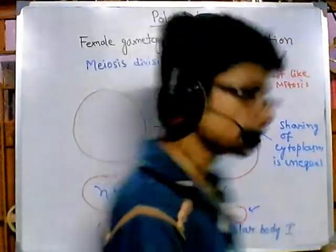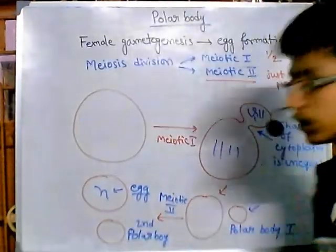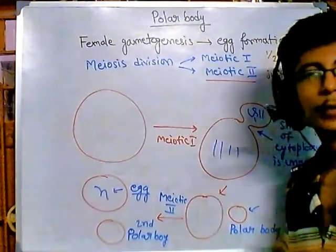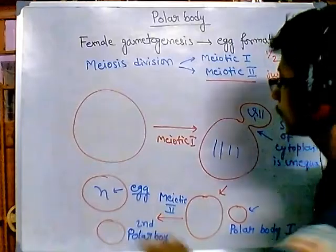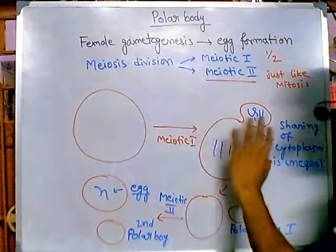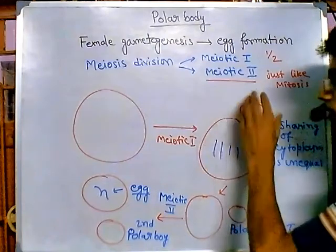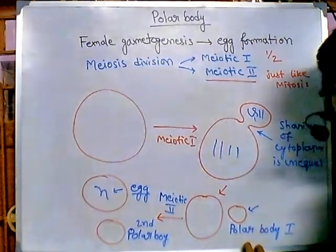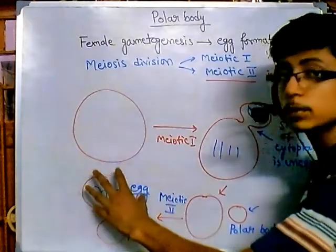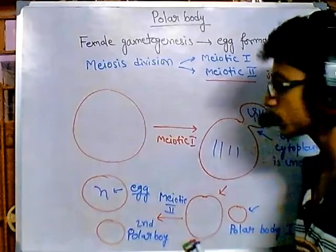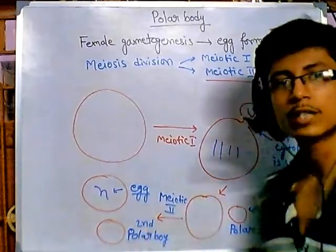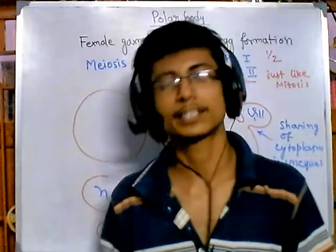So these are called polar bodies, guys. No confusion. This is also generated during the gametogenesis of females — the production of the egg. During this process, after meiotic 1, sharing of cytoplasm is unequal and produces a large cell and a small cell — that small cell is called polar body 1. During the second meiotic division, again unequal sharing of cytoplasm gives a large cell which is called egg, having n number of chromosomes, and a small cell called the second polar body. So that's it, guys. No rocket science.